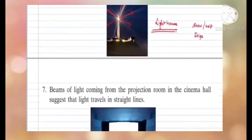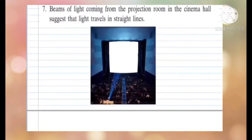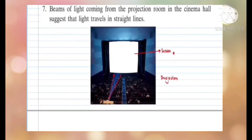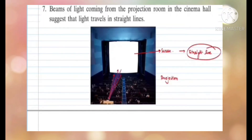Let's look at one more example from daily life. Students, you must have gone to theatres to see movies. When you go to a theatre, you must have seen light coming from behind you — this light is the projection of the movie you see on the screen. Next time you visit a movie theatre, observe whether the light coming out of the projector is coming in a straight line. You will observe that yes, the light coming out from the projector is coming in a straight line.